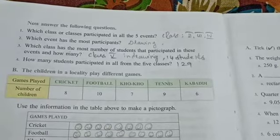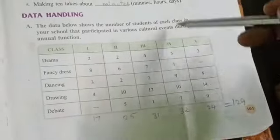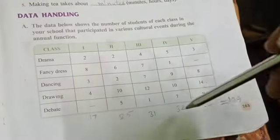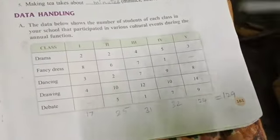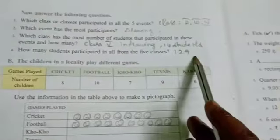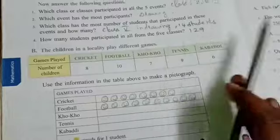How many students participated in all from the five classes? Each class you will take the total and find the grand total. It is 129, so the answer will be 129.